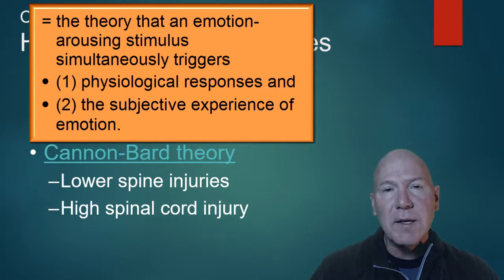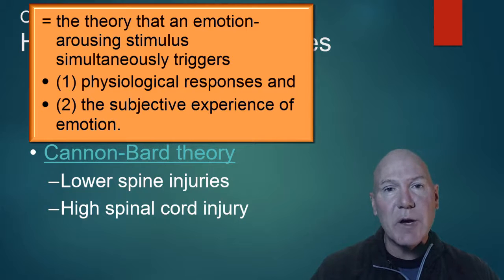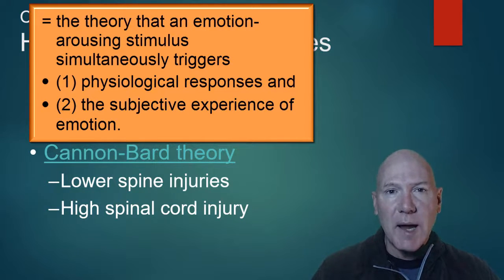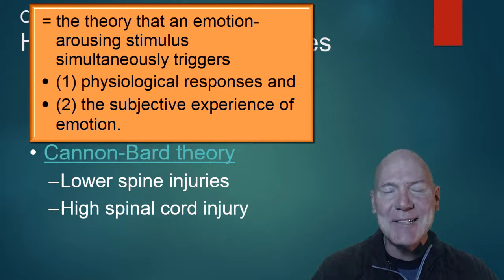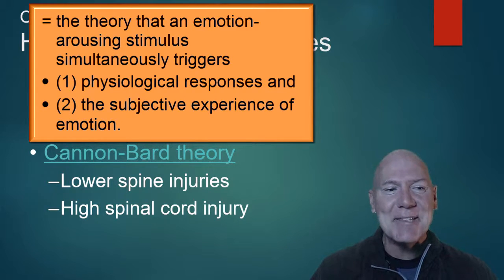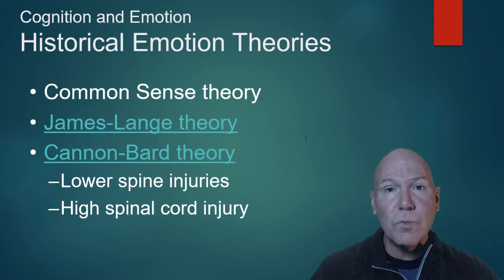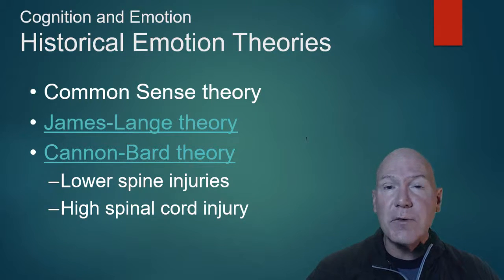The Cannon-Bard theory says that simultaneously our appraisal of the situation — say the driver cutting us off — is processed by our brain and by our physiology, our nervous system, simultaneously at the same time. So it happens right then. Those are the first historical theories.